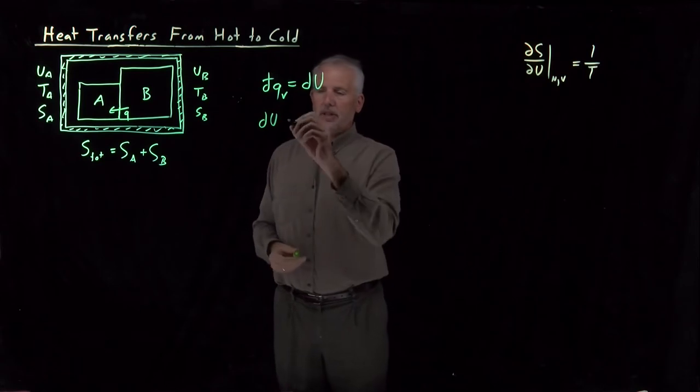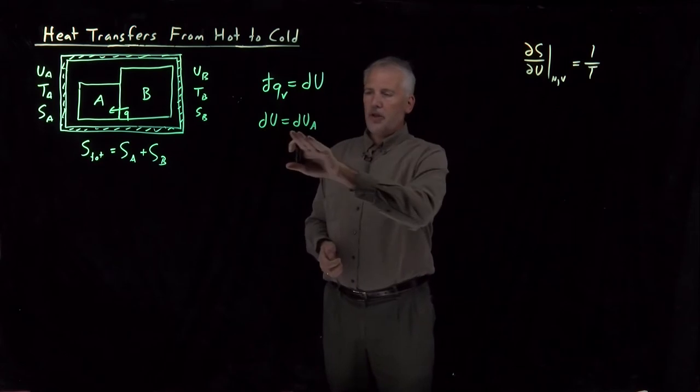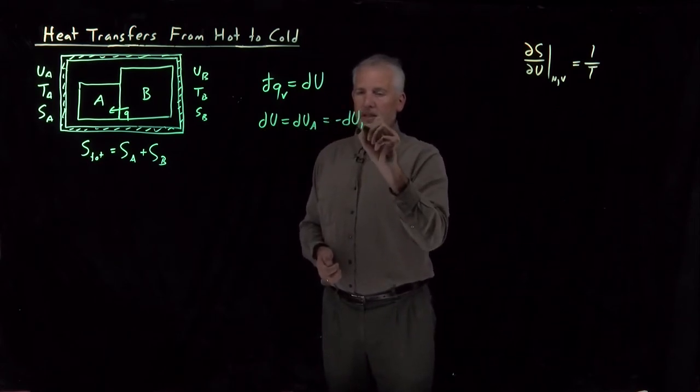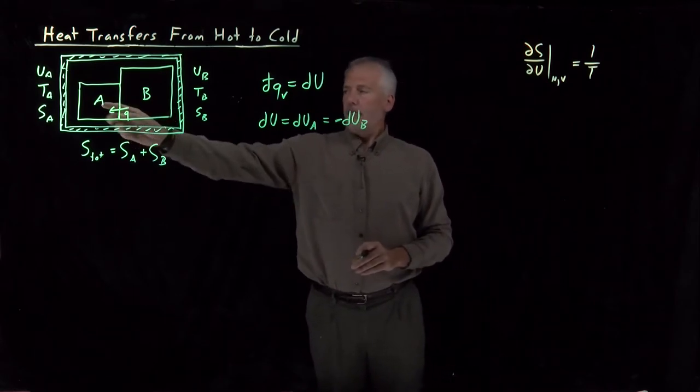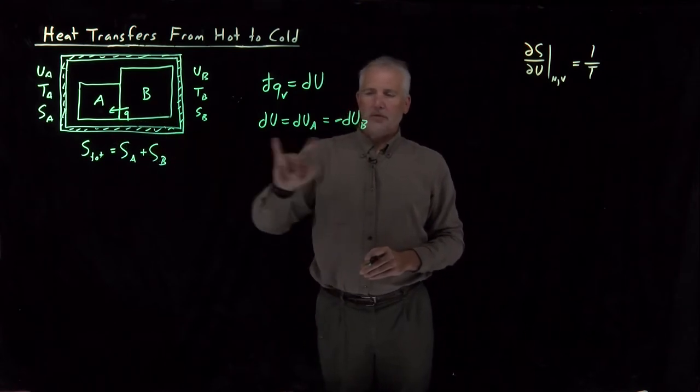If there's some change in the energy, a positive DU will be a positive change for A, and that's equal to the opposite in sign for B. If heat is transferred from B to A, energy changes equal and opposite sign for the A system as it is for the B system.